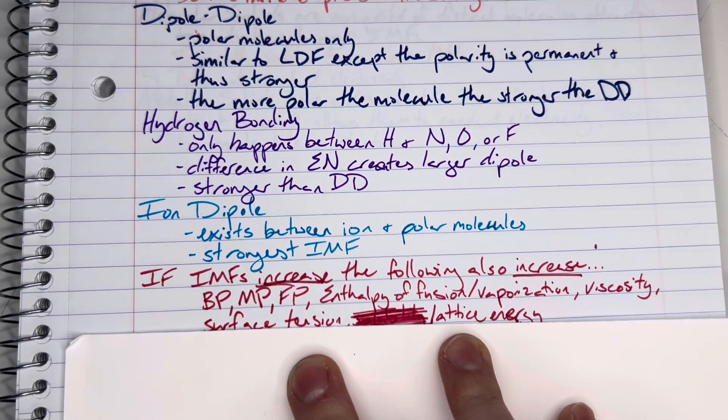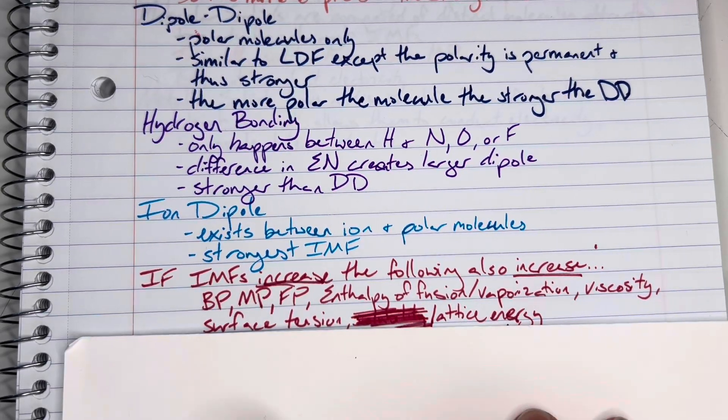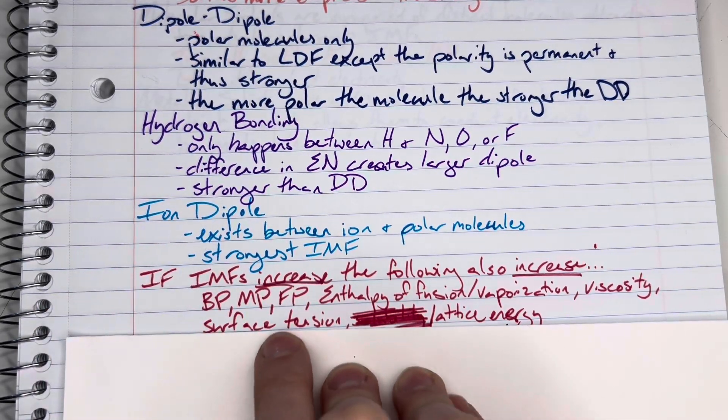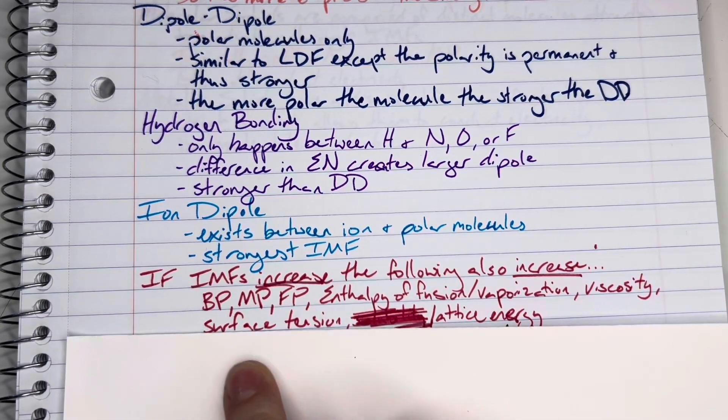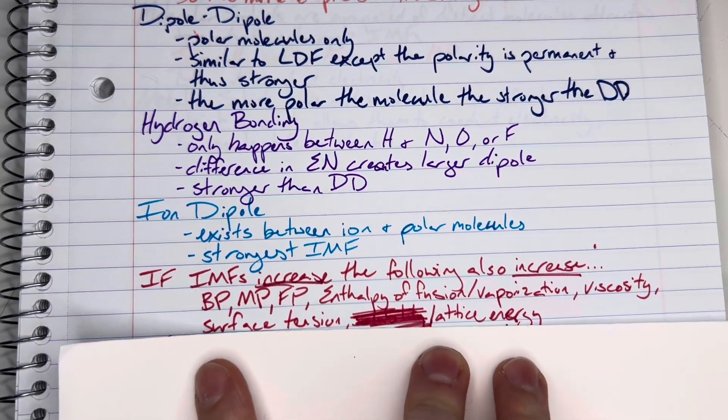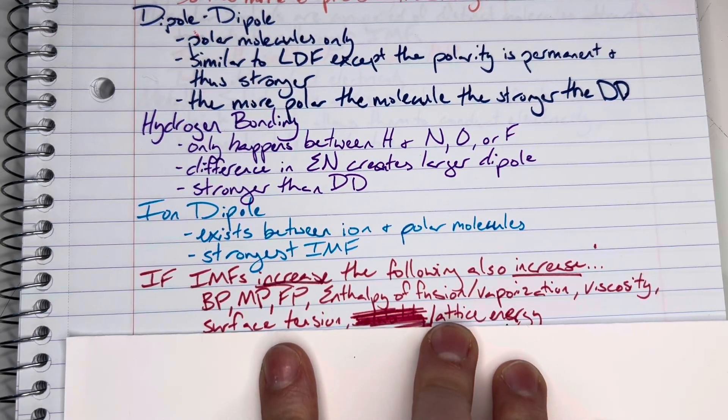And for how the intermolecular forces impact certain properties, if intermolecular forces increase, the following also increase: boiling point, melting point, and freezing point, as well as the enthalpy of fusion or vaporization, viscosity, surface tension, and lattice energy.